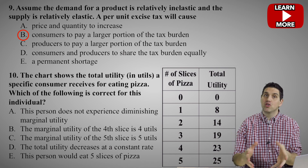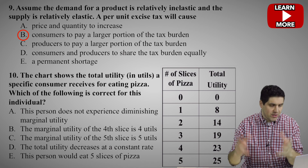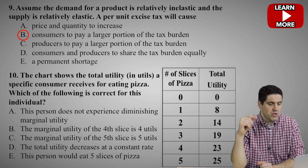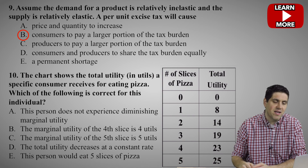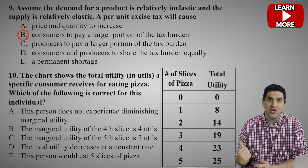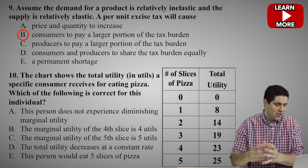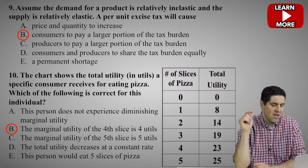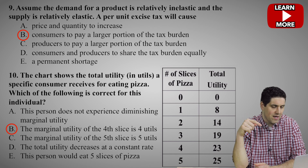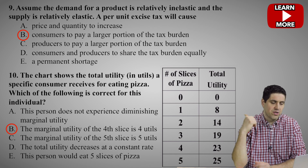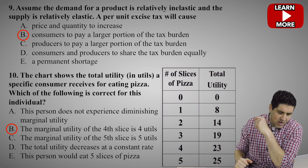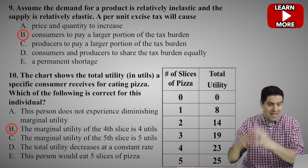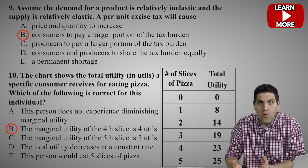For question number 10, we're talking about consumer choice and utility — total utility and marginal utility. The first thing you need to do is calculate marginal utility. The chart shows total utility for somebody eating pizza: zero, one, two, three, four, five slices, and the total satisfaction in utils. The right answer is B: the fourth pizza gives this person four utils. Going from three to four slices, total utility went from 19 to 23 — an increase of four utils for that slice.